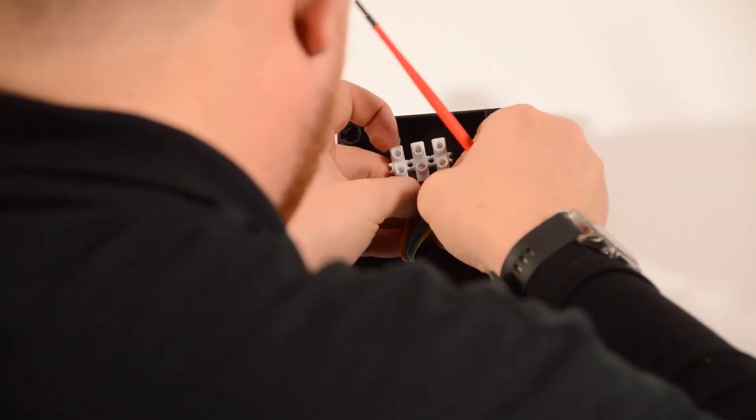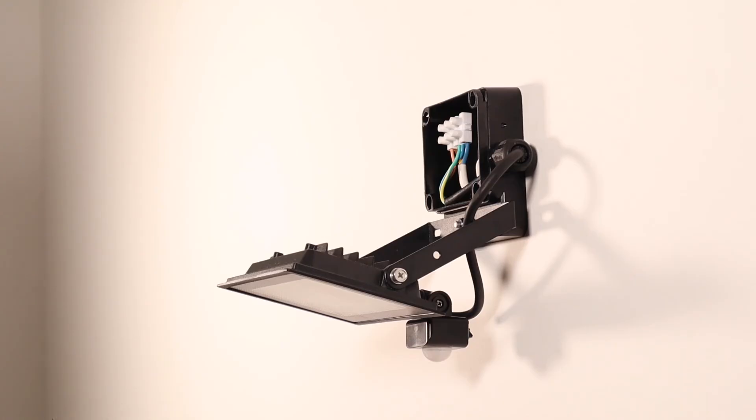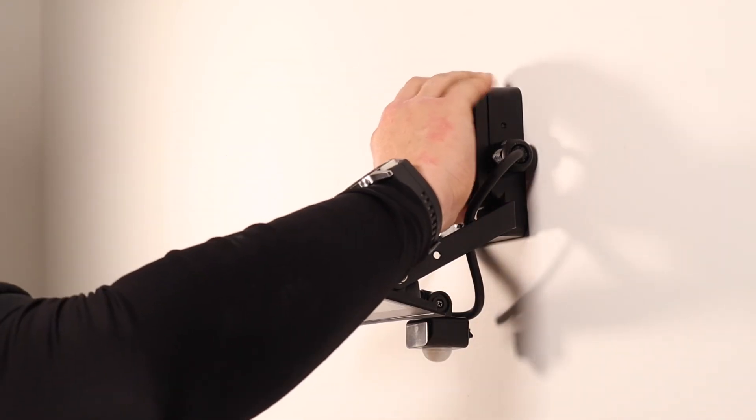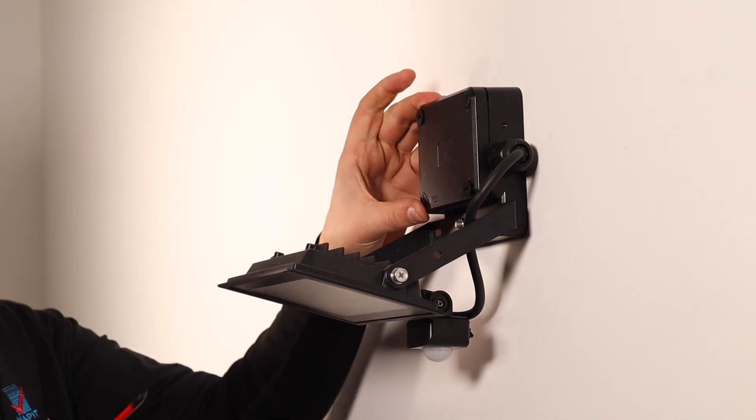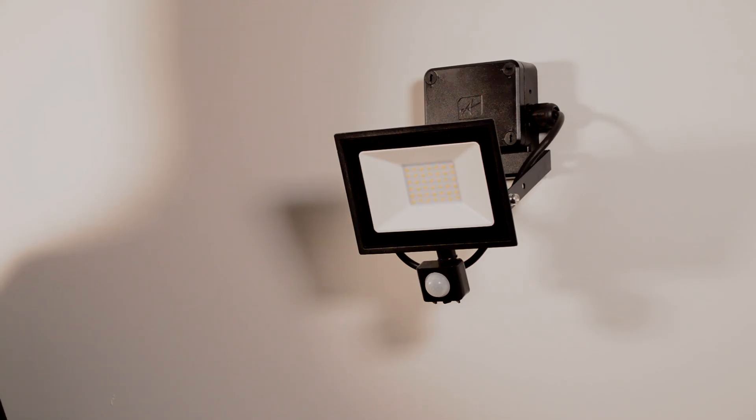Connect your supply to the terminal block. Reattach the lid of the flood box and tighten the four corners. Restore the electrical supply, then switch on your luminaire.